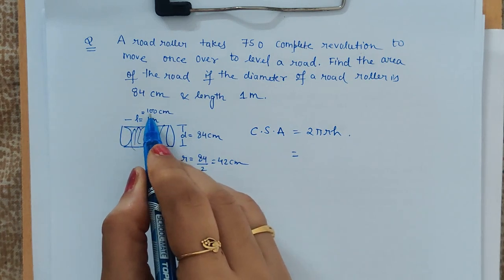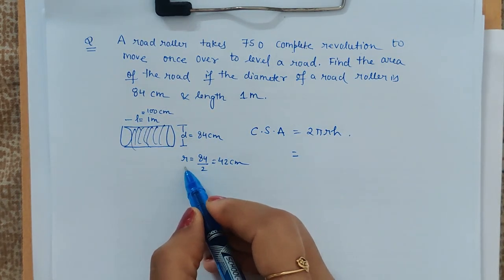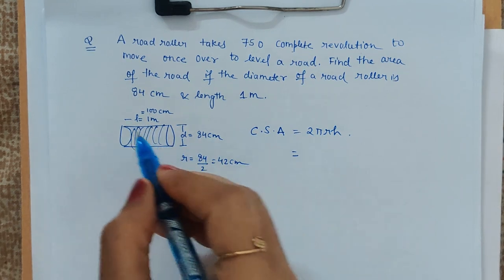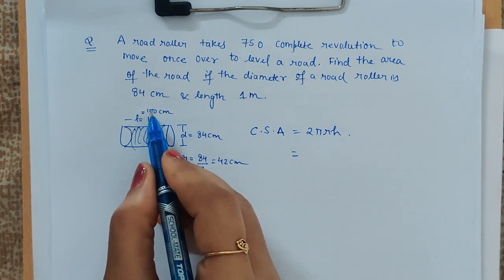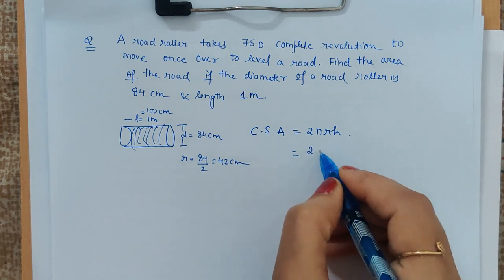Its length is 100 centimeters and diameter is 84 centimeters, so radius comes out to be 42 centimeters. Length was given in meters: 1 meter, and 1 meter equals 100 centimeters.